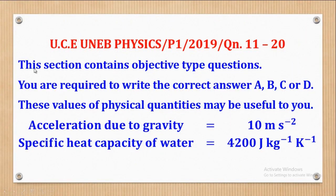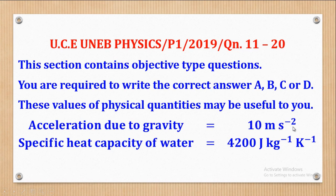As we said in the previous lesson, the following section consists of objective type questions and you are required to answer either A, B, C, or D — four alternatives, but you choose the one which is correct. When necessary, the following constants may be used: the acceleration due to gravity will be taken as 10 meters per second squared and the specific heat capacity of water will be taken as 4200 J per kilogram per Kelvin.